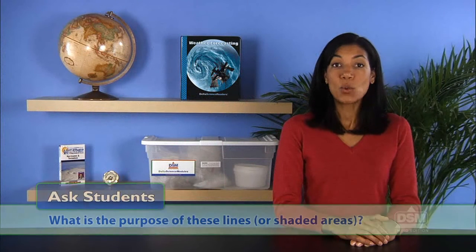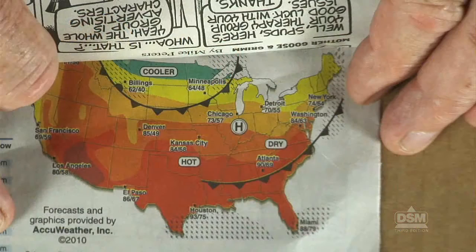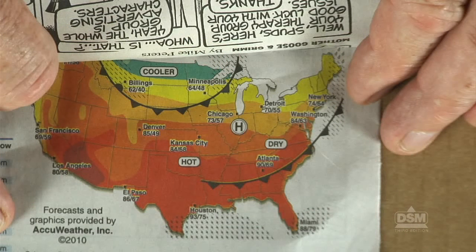Now ask: what is the purpose of these lines or shaded areas? Students should be able to see that the lines represent areas having the same pressure or temperature. Discuss how visually connecting areas with the same air pressure helps represent the sizes and shapes of air masses. Once these huge air masses can be visualized, their movement can be better understood and forecasted.